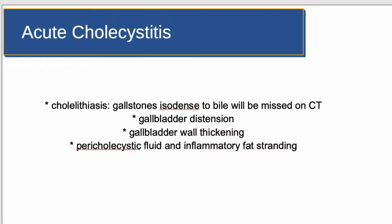Cholelithiasis, or the presence of gallstones, is the major risk factor and causes up to 95% of cases. Patients with acute cholecystitis present with constant right upper quadrant pain which can radiate to the right shoulder. Pain typically persists for more than 6 hours, in contradistinction to the intermittent right upper quadrant pain of biliary colic. Patients can also present with nausea, vomiting, and fever.